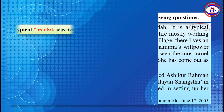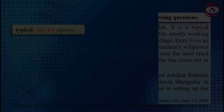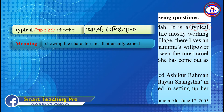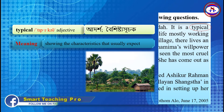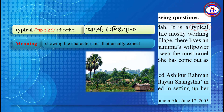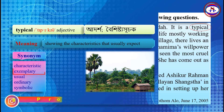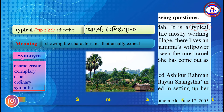The word 'typical' is used here as an adjective. That means showing the characteristics that you usually expect. The synonyms of the word typical are: characteristic, exemplary, usual, ordinary, and symbolic.